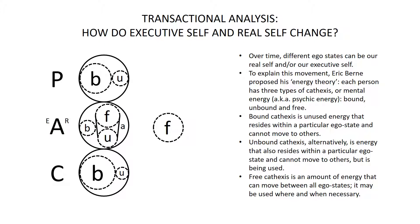Over time, different ego states can be our real self and our executive self. To explain this movement, Eric Berne, the founder of transactional analysis, proposed his energy theory. It holds that each person has a certain amount of cathexis, or mental energy, sometimes known as psychic energy. This is split into three types: bound cathexis, unbound cathexis, and free cathexis. Bound cathexis is unused energy that resides within a particular ego state and cannot move to others. Unbound cathexis is energy that also resides within a particular ego state and cannot move to others, but is being used. Finally, free cathexis is an amount of energy that can move between all ego states and may be used where and when necessary.